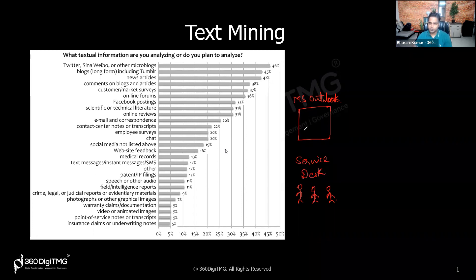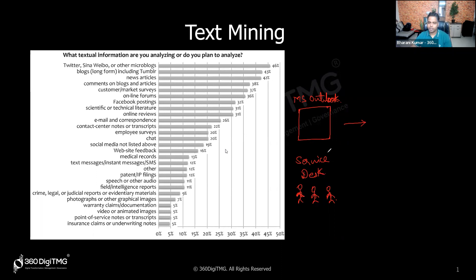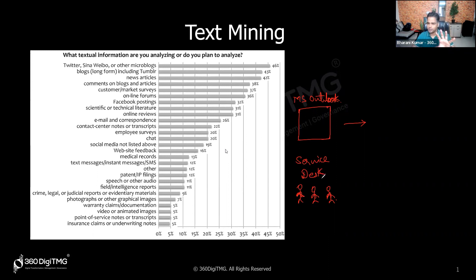Customers would email things like: 'My credit card is not working,' 'A transaction I didn't do got deducted,' or 'My net banking password is not working.' If the service desk could resolve the issue, they would. Otherwise, they'd assign it to the right resolver group — credit card department, net banking department, etc. — escalating to Level 2 or Level 3 support if needed.